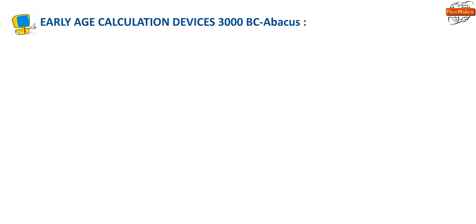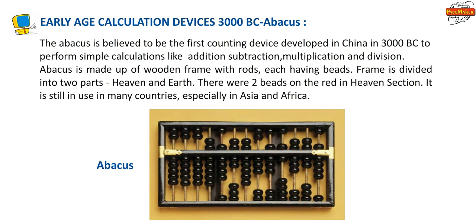Early Age Calculation Devices — 3000 BC Abacus: The Abacus is believed to be the first counting device developed in China in 3000 BC to perform simple calculations like addition, subtraction, multiplication and division. Abacus is made up of a wooden frame with rods, each having beads. The frame is divided into two parts, heaven and earth. There were two beads on the rod in the heaven section and five beads in the earth section. It is still in use in many countries, especially in Asia and Africa.